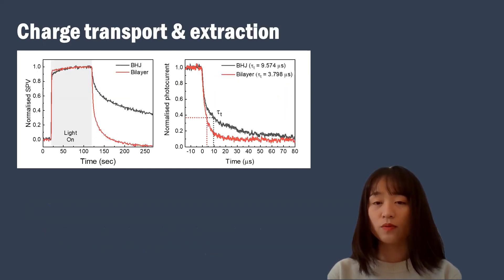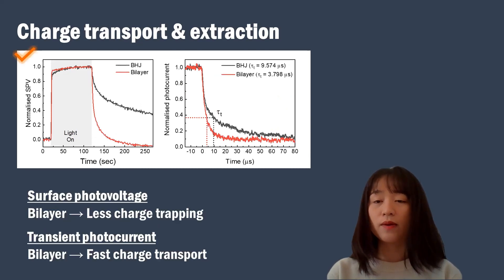Charge transport and extraction properties are further investigated to confirm the origin of better device performance of bilayers. From surface photovoltage measurement, bilayer devices show much faster turn-on and off SPV transient upon the light illumination, indicating less charge trapping of bilayer devices. In transient photocurrent, bilayer devices show much faster charge transport time, which also supports efficient charge transport and extraction properties.